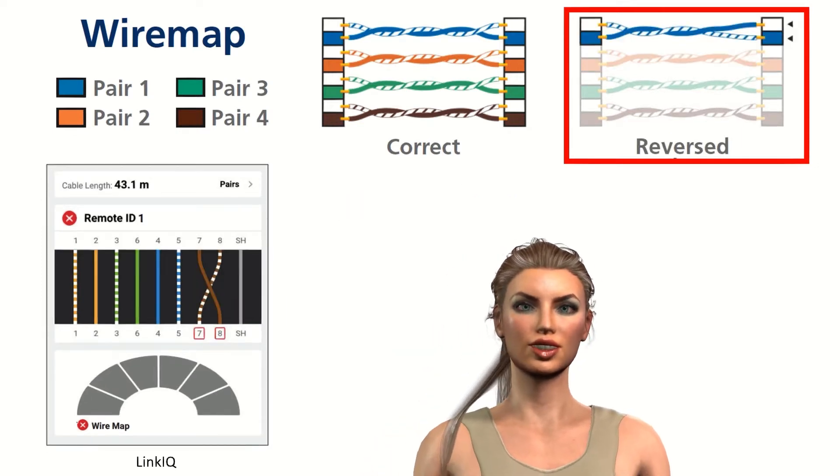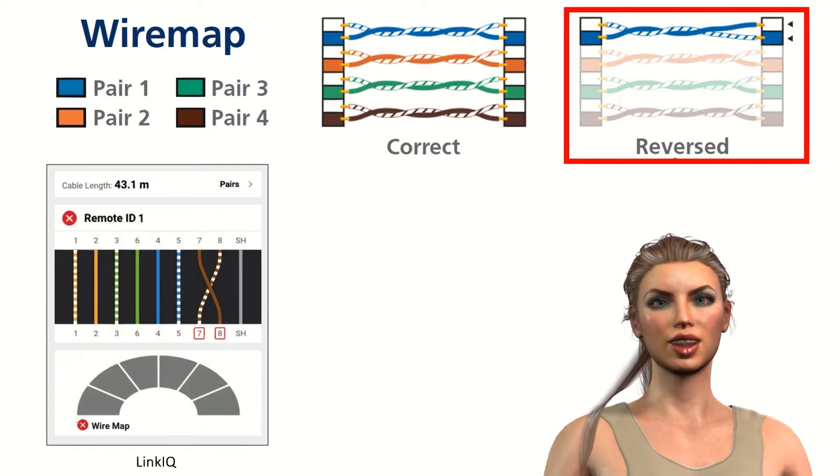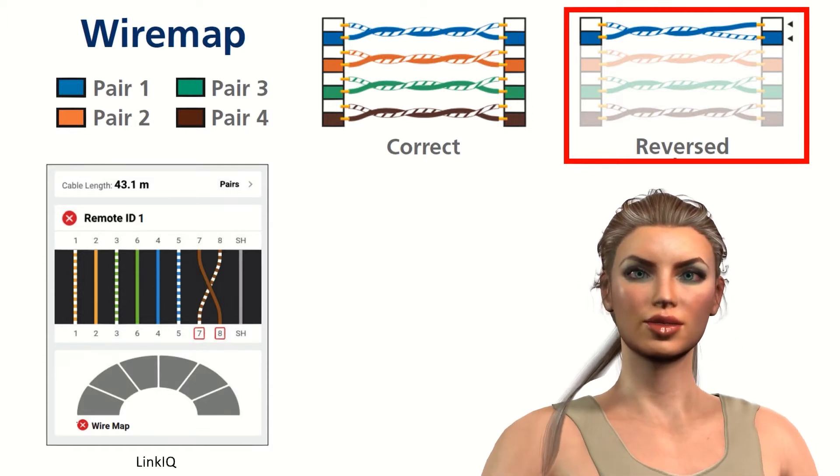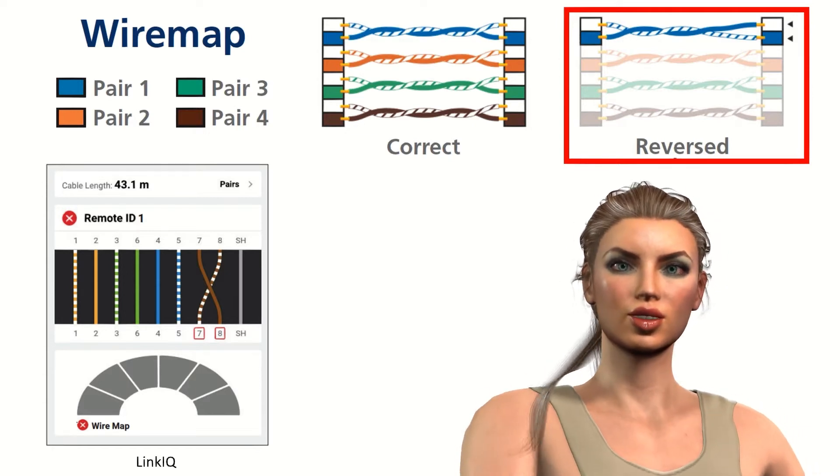Reversed cables: this happens when the two wires in a pair are connected to opposite pins of the same pair at the other end of the wire. For example, if cables 7 to 8 at one end are connected as 8 to 7 at the other end.